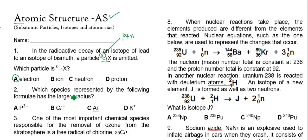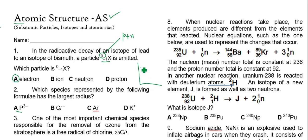Question 2 asks which species has the largest radius. Remember, cations always have a smaller radius than their parent atom, whereas anions always have a larger radius than their parent atom. Considering phosphorus, chlorine, and argon — they are in the same period of the periodic table. The phosphide ion definitely has the greatest ionic radius compared to its parent atom.